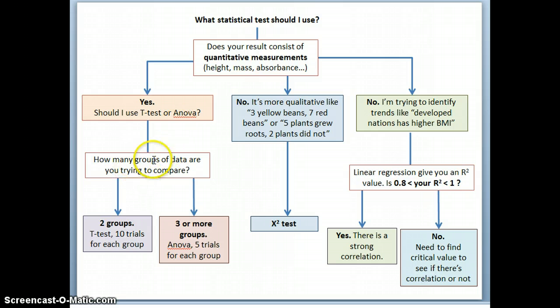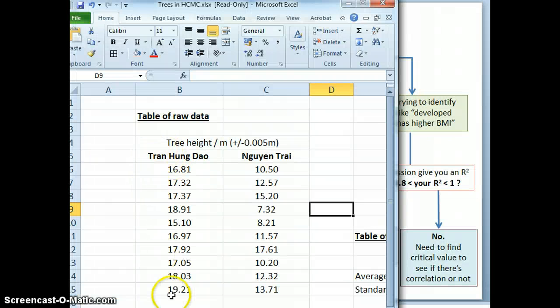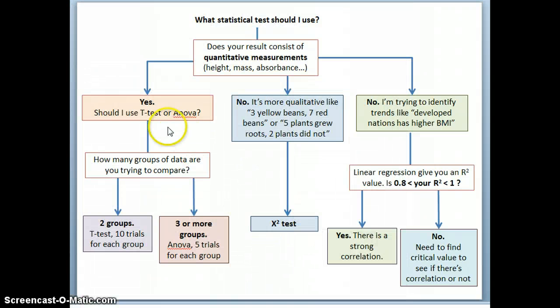Now, how many groups of data do I have? Well, it looks like I have two groups. I have a group that is on Chen Pingdao Street, and then I have a group that is on Rin Chai Street. So I'm going to go down this way. I have two groups.